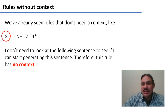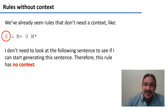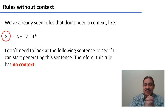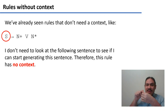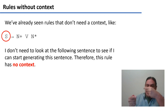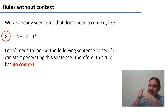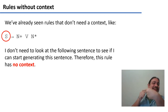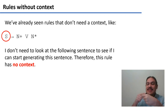Let's look at some rules that do not need to look at their context. We've already found one of these examples: the basic English sentence has one or more nouns for the subject, a verb, and zero or more nouns for the direct object. If I'm generating my sentence, I don't need to look at the following or preceding sentence to determine its structure. I have everything I need right here. This rule does not see the context.